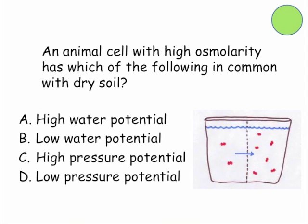And so with this clicker question, it reads: An animal cell with high osmolarity has which of the following in common with dry soil? And our answers are A, high water potential, B, low water potential, C, high pressure potential, and D, low pressure potential.